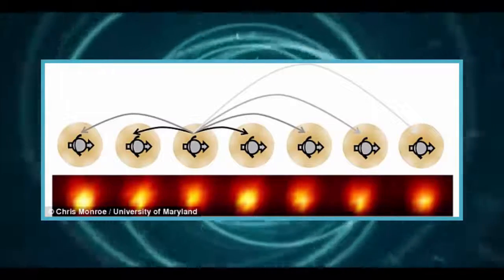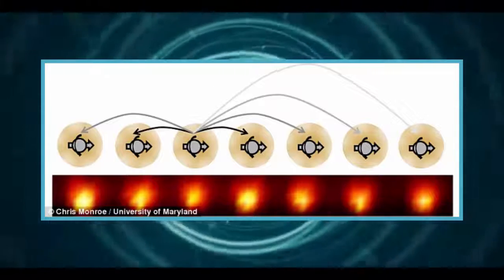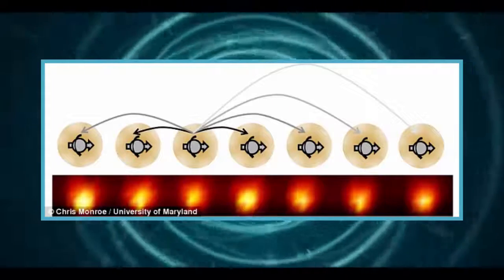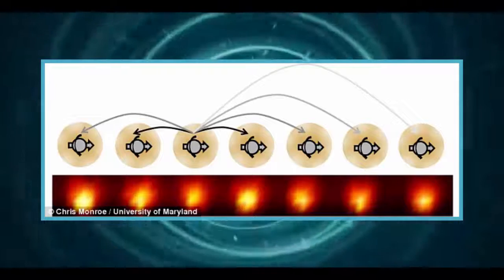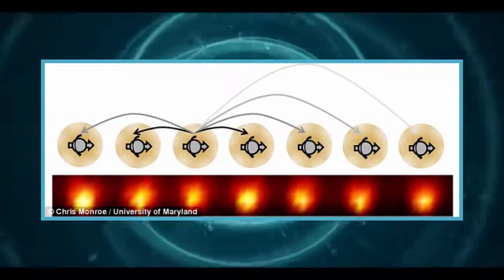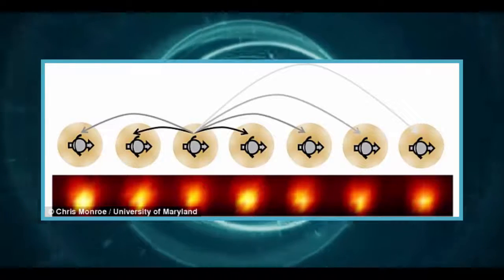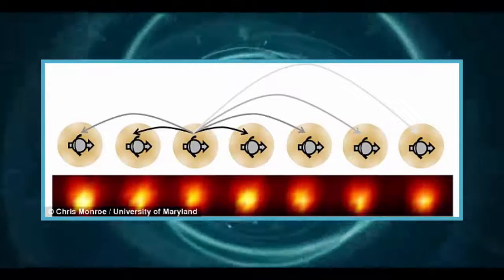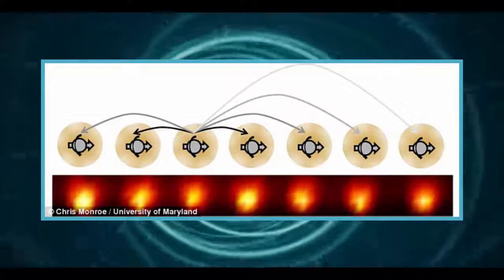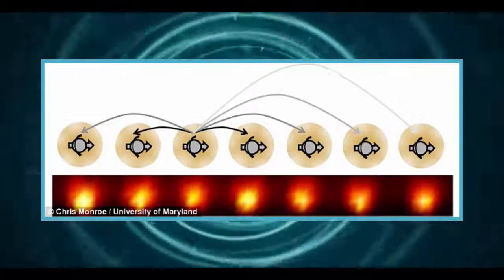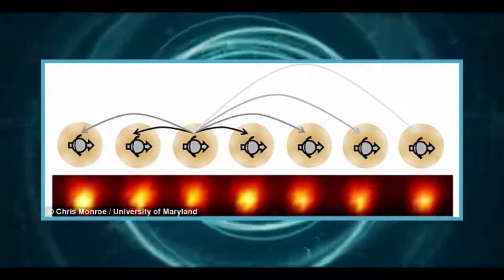'This bizarre state of matter results from a complex interplay between many quantum controls at the individual atomic level,' says Christopher Monroe, a UMD distinguished university professor of physics and a JQI fellow. 'But time crystals can also emerge in certain solid-state devices, so a general understanding of this phenomenon could help bring such systems into future quantum devices.'